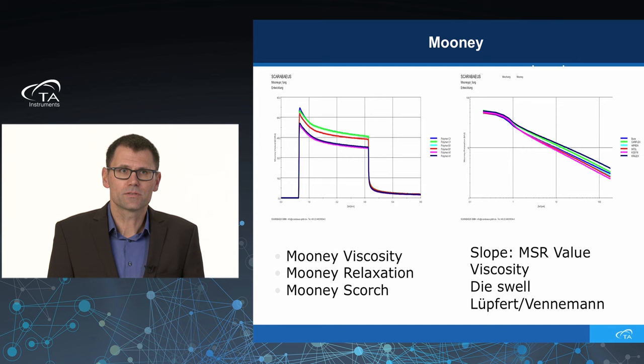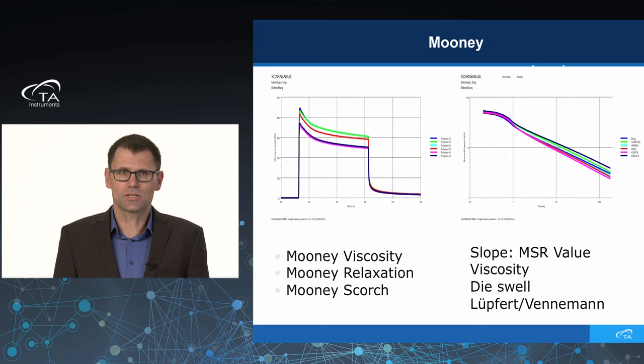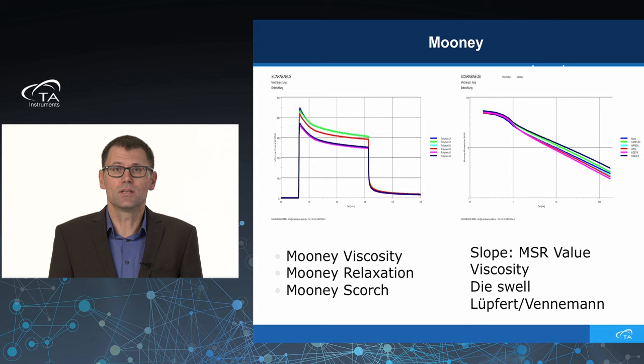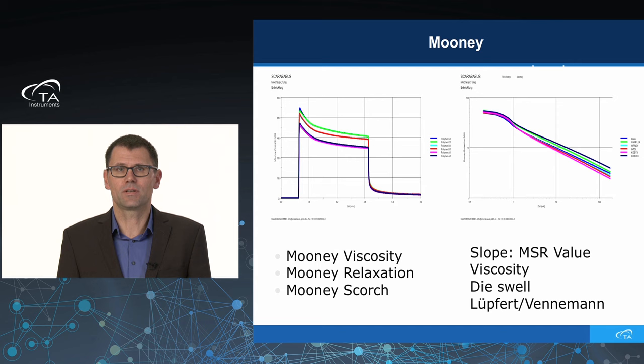When you do a Mooney viscosity test, it makes definite sense to add a two-minute relaxation test. The relaxation test gives you more information about elasticity and die swell. When you plot it on a log-log scale, you get curves where the slope of such a curve is the MSR value — the Mooney Stress Relaxation value. I will come back to this value in more detail later.